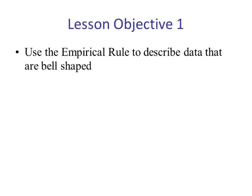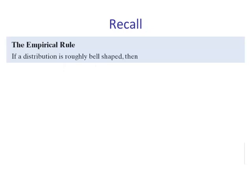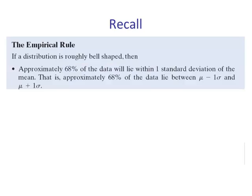Lesson objective number one: the empirical rule. If a distribution is roughly bell-shaped, then approximately 68% of the data will lie within one standard deviation of the mean. So if we go one standard deviation below the mean and one standard deviation above the mean, we expect 68% of the data to be within that interval.